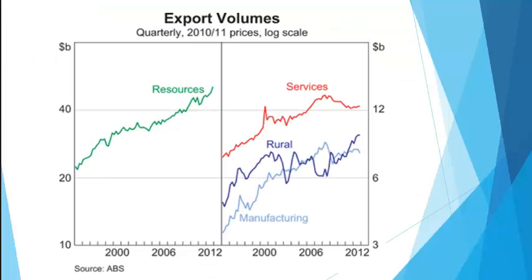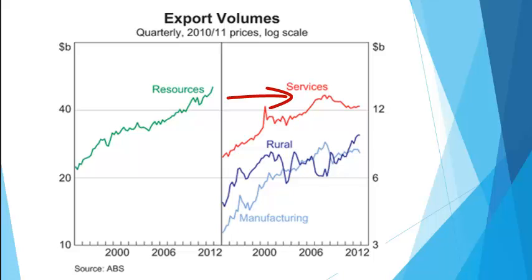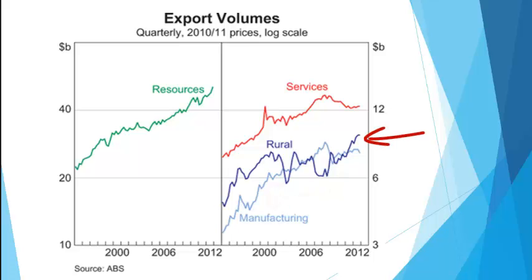Let's have a look at some export volumes. You can see that resources have been performing really quite well. But as you know about China, this is tapering off, though it hasn't really been reflected yet on this graph. Services — mainly education and tourism — have been hit by the Australian dollar, as has manufacturing, as you can see in the light blue line. Rural exports have taken a bit of a hit upward from a low base, as we had droughts and floods in Queensland and so forth.